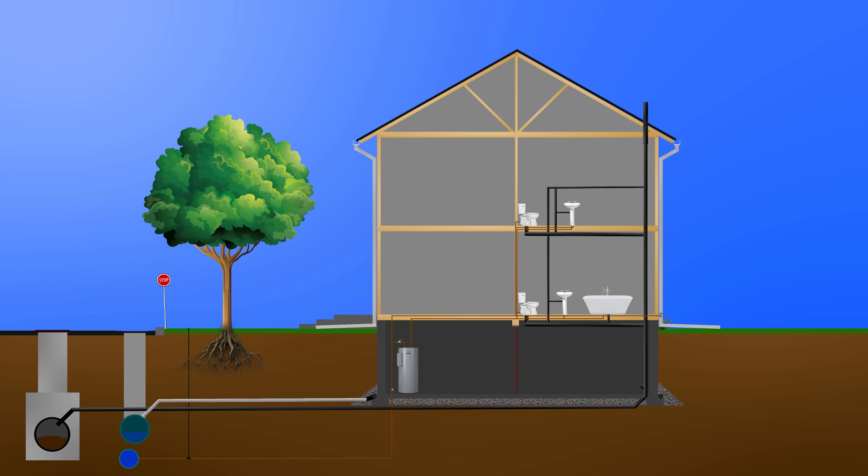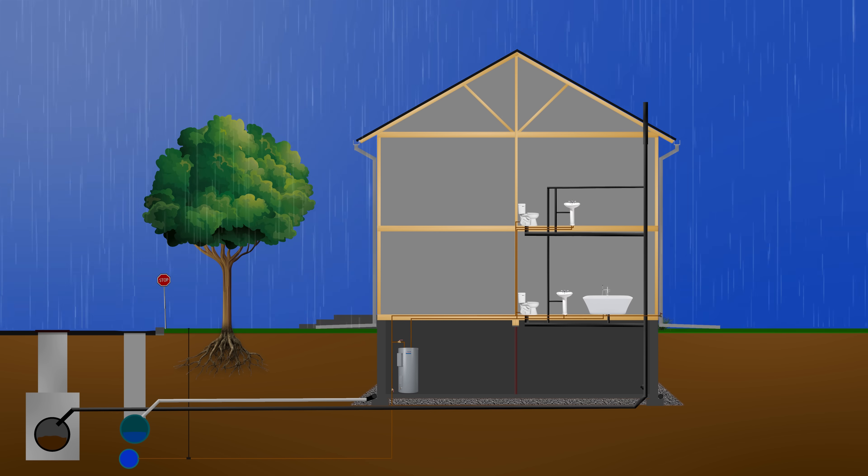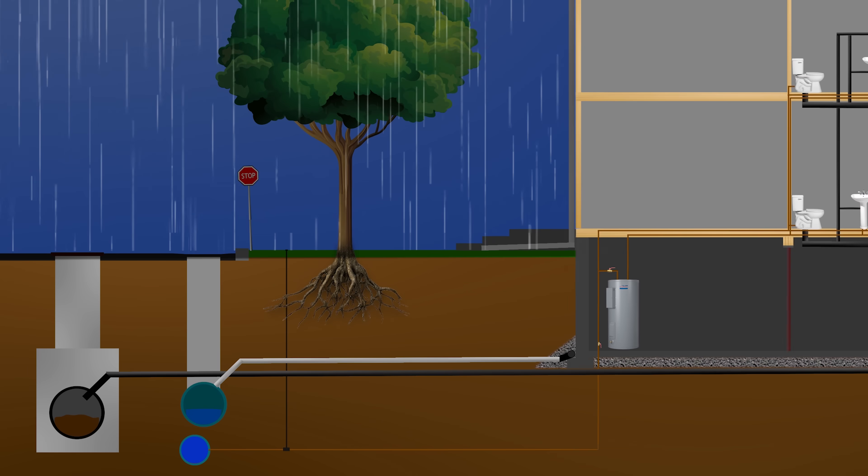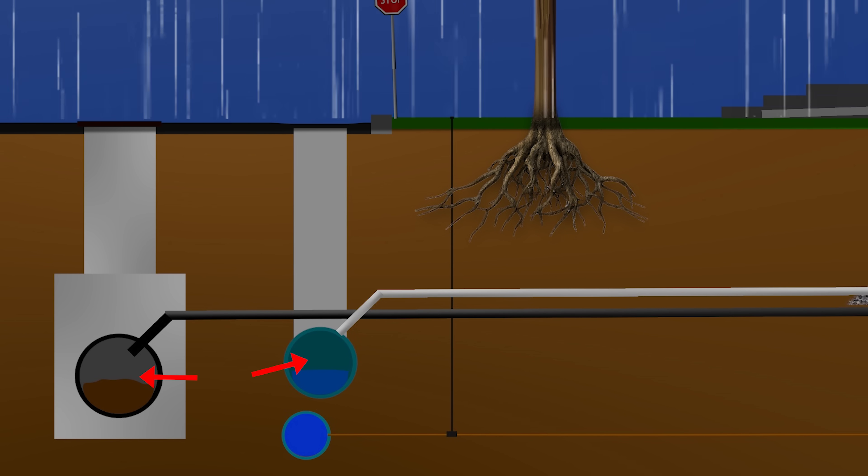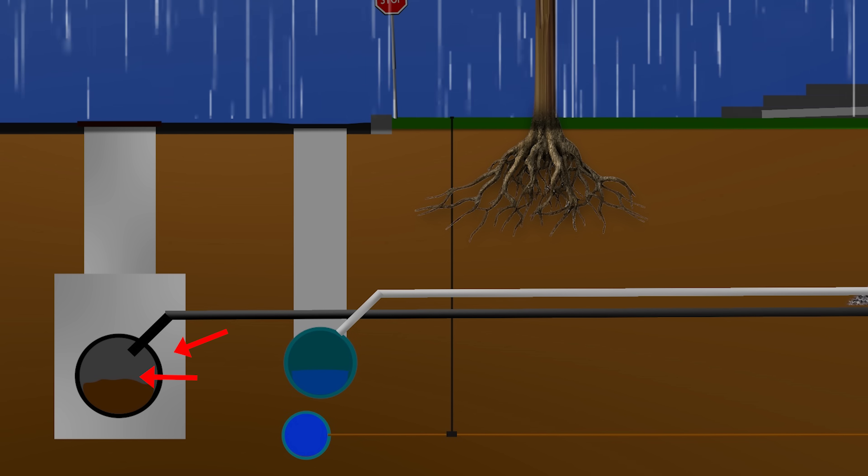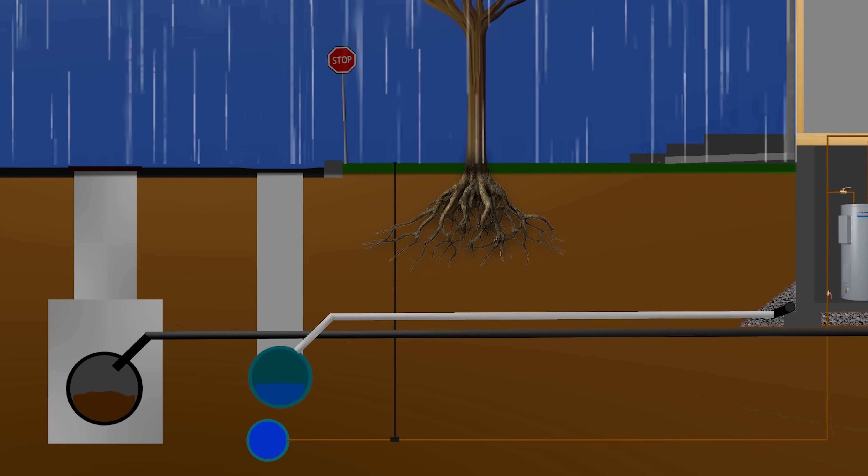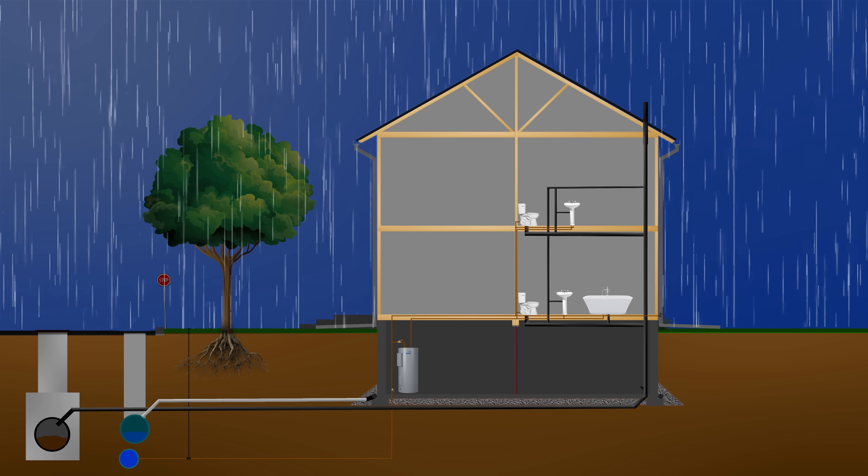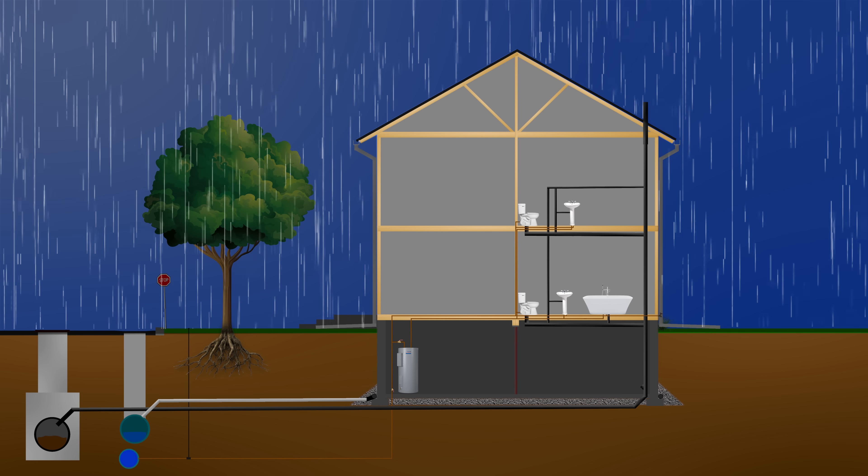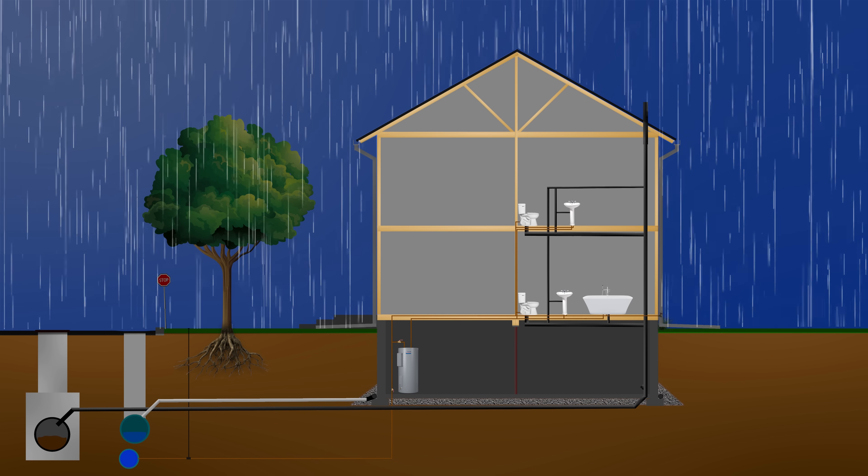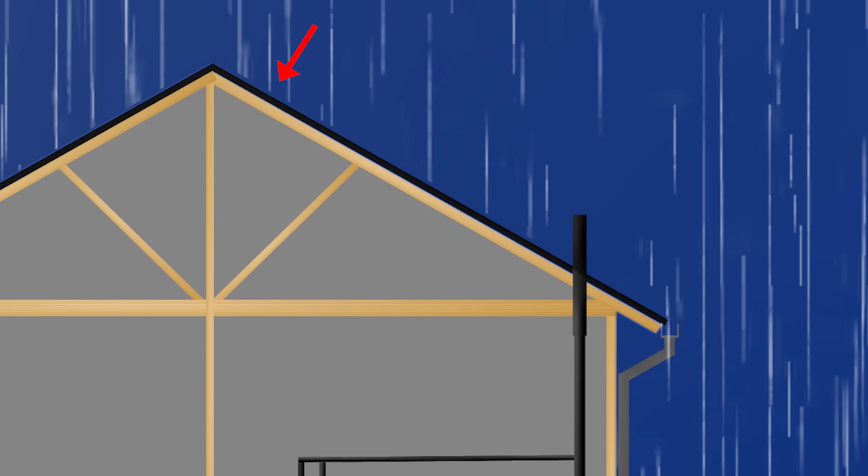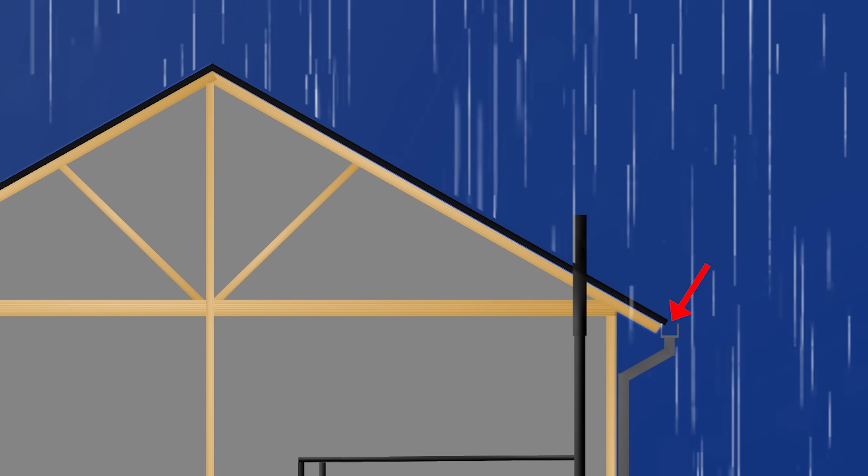And the last aspect is rainwater management. In the past, rainwater and sewage was combined, meaning the rainwater went into the same sewer as the waste from your house. Since then, they've been separated to make water management easier. So when it rains, all of this water has to go somewhere, right? The rain that falls on the house's roof trickles into the gutters.